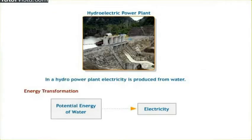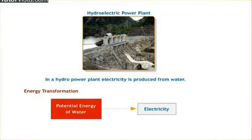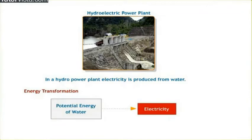In a hydropower plant, electricity is produced from water. Hydro power plants convert the potential energy of water into electricity.